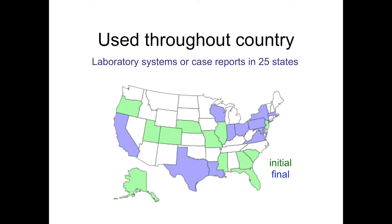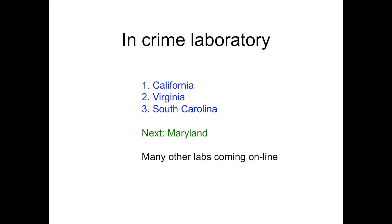TrueAllele is used throughout the United States, whether as laboratory systems purchased by crime labs or described in case reports that prosecutors, police, or defense attorneys might request. There have been several hundred cases that Cybergenetics has been involved in, across half the states in the U.S. In the crime laboratory, a dozen or more crime labs have purchased TrueAllele for in-house use. The first group to go live was Kern County in California — Bakersfield. The second was the Commonwealth of Virginia, where TrueAllele is used across the state for complex mixtures with three or more contributors. South Carolina was next, and Baltimore, Maryland may well be the next group to go live.